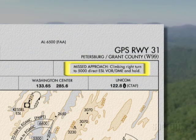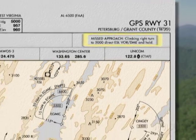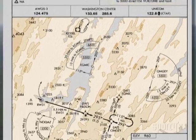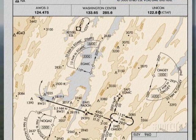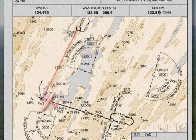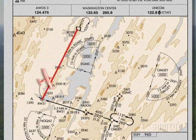These missed approach procedures are specific. This one says to go direct to the Kessel VOR. Some others might specify a radial to intercept and fly. Would you press direct at the missed approach point and make the turn and then go intercept what was a track direct from the MAP to Kessel?